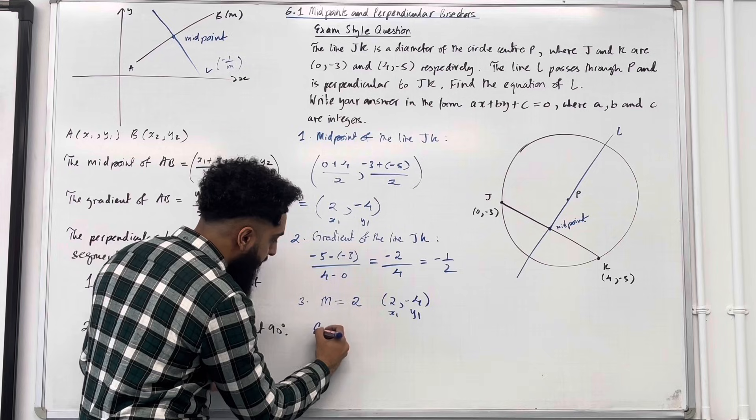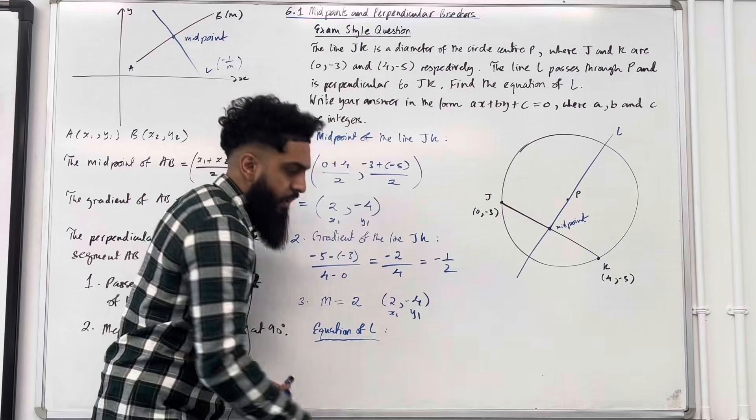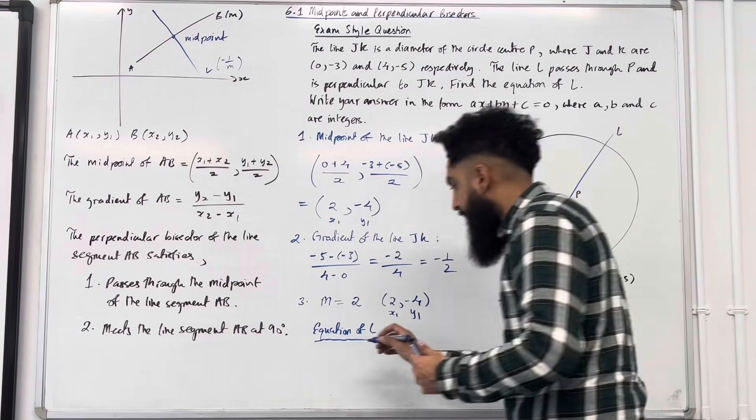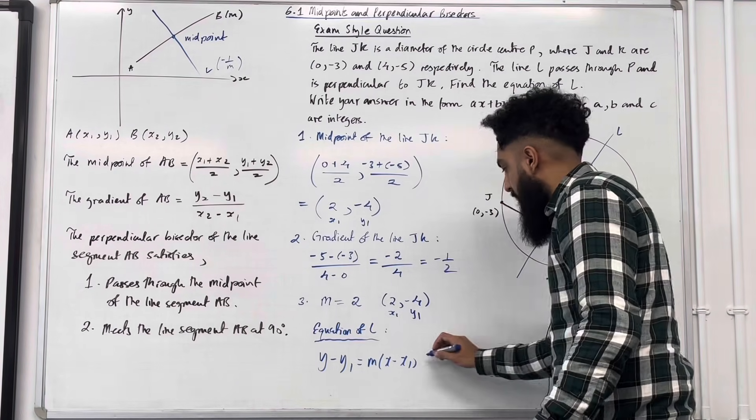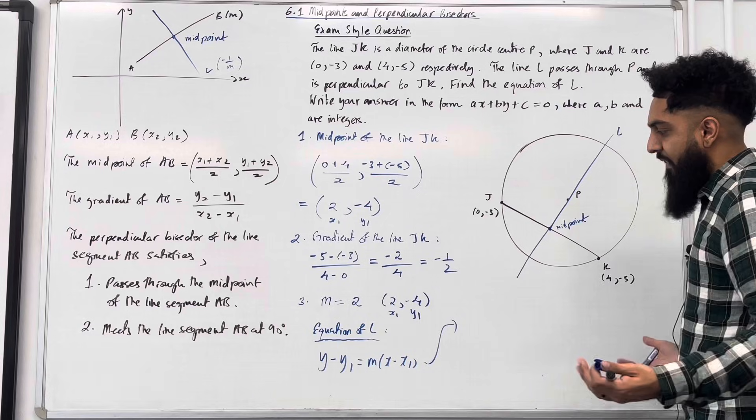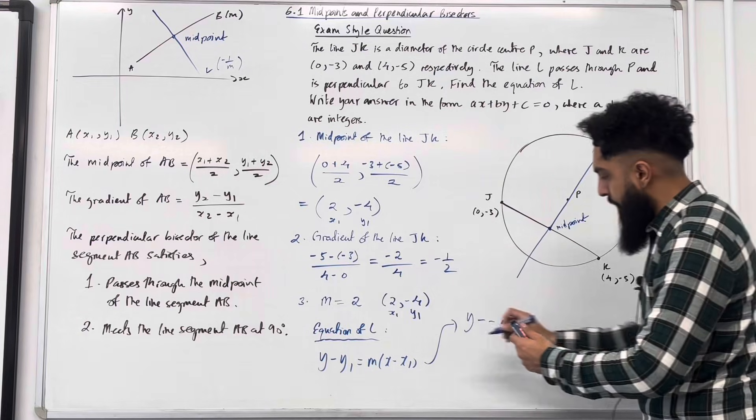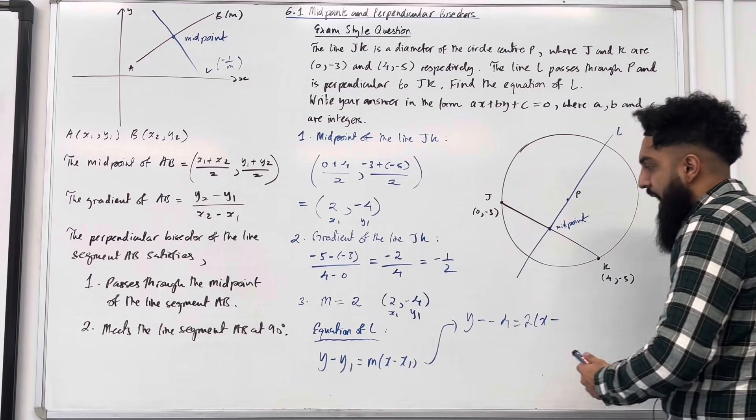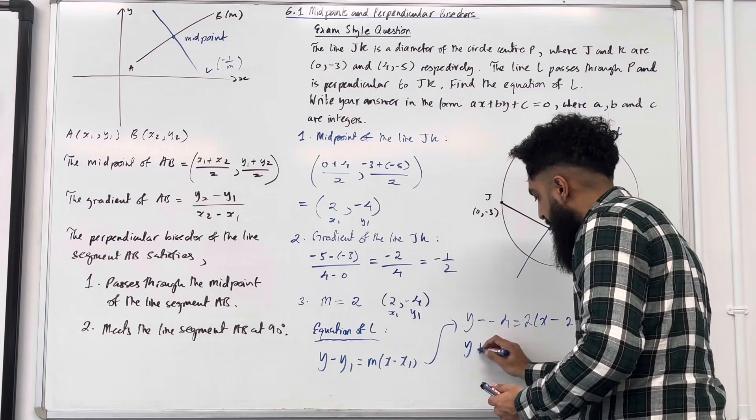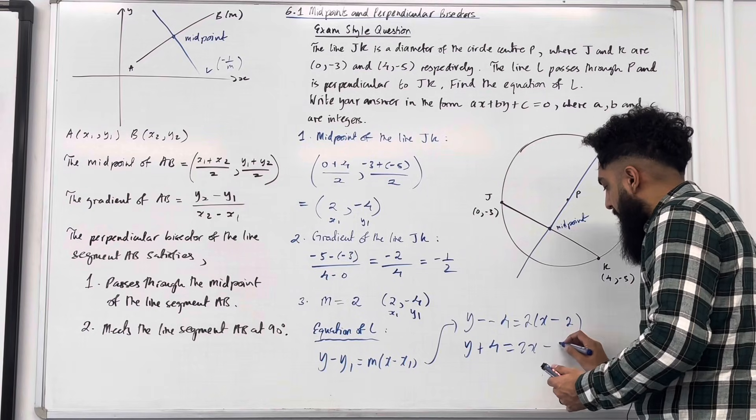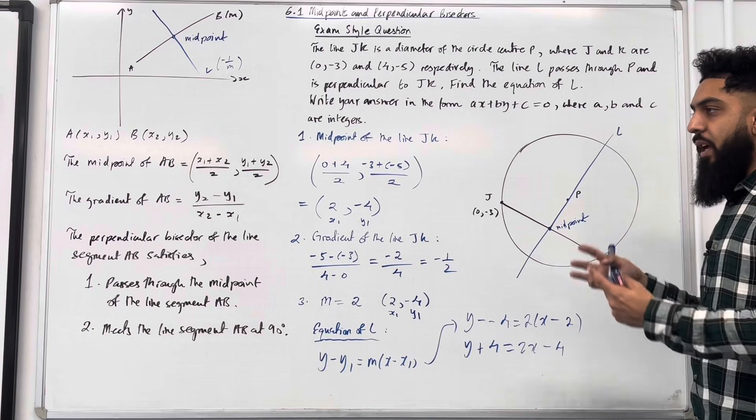Now I'm going to proceed forward and work out the equation of L. To find the equation of L, we use the formula y minus y1 equal M in bracket x minus x1. I'm going to plug my values in now. I've got y minus minus 4 equal M which is 2 in brackets x minus my x1 which is 2. I'm going to expand this. This gives me 2x minus 4. I need to write it in the form ax plus by plus c equal to 0 where a, b and c are integers.